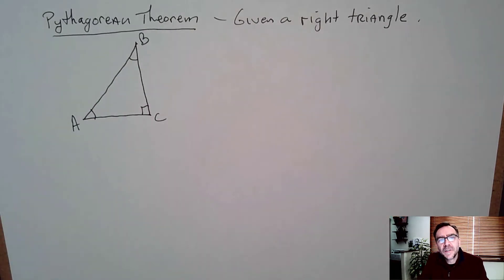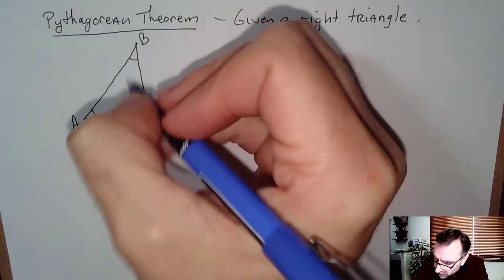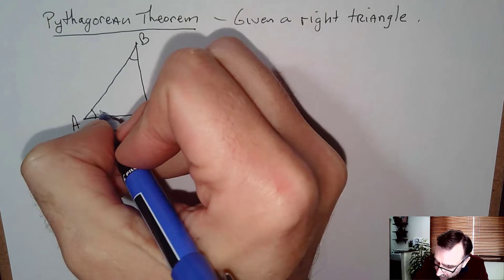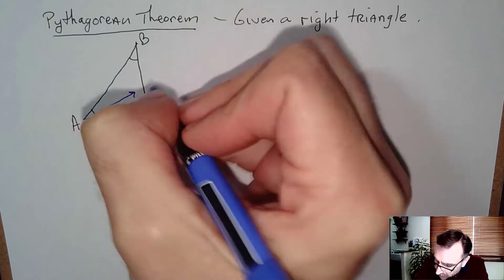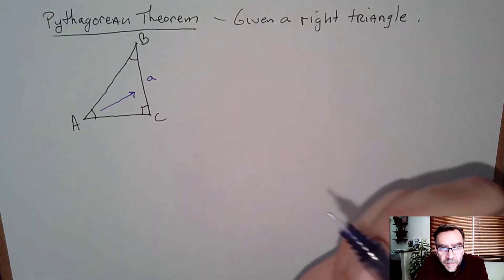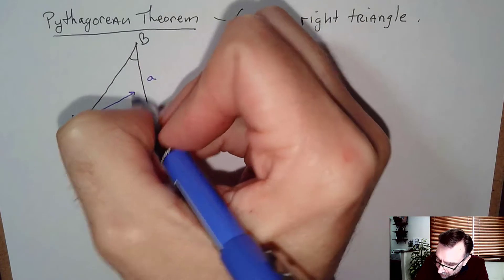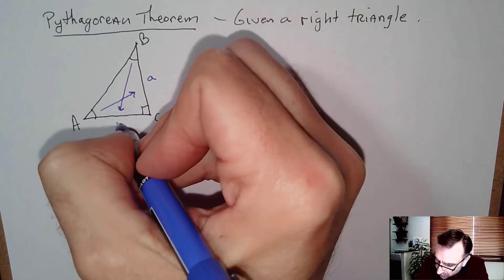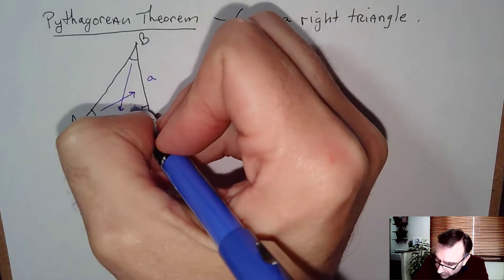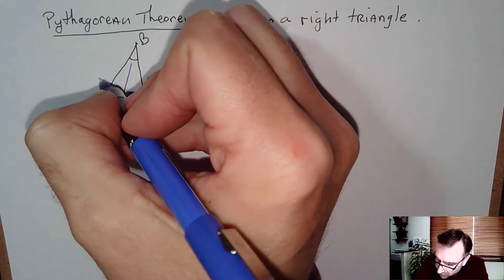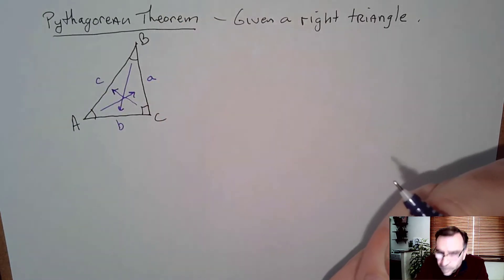Typically in this course we're going to label the length of the side opposite of angle A with a little a, the side opposite of angle B with little b, and the side opposite of angle C with little c.